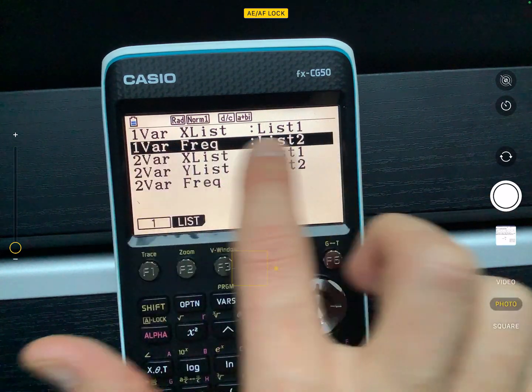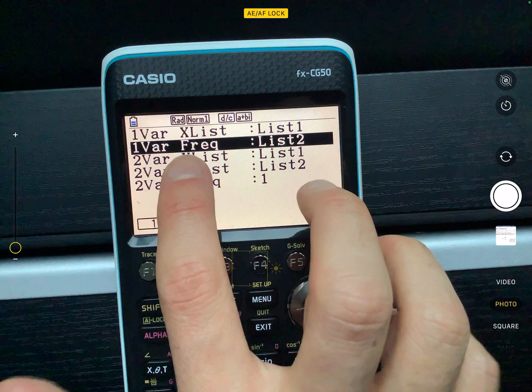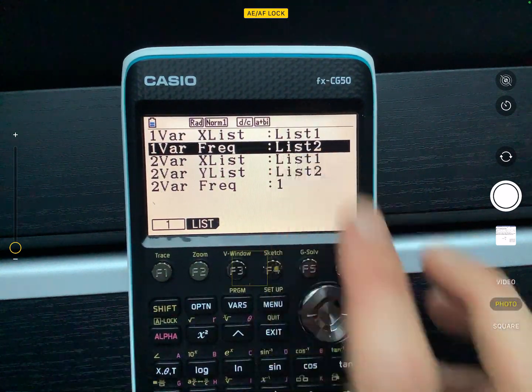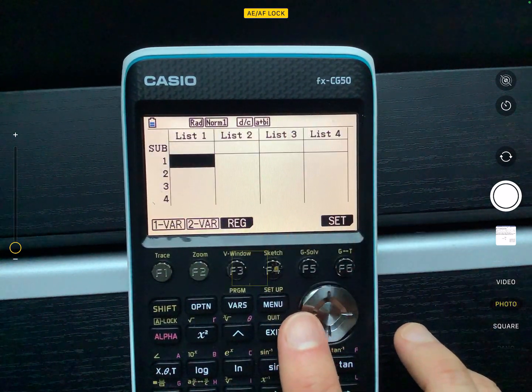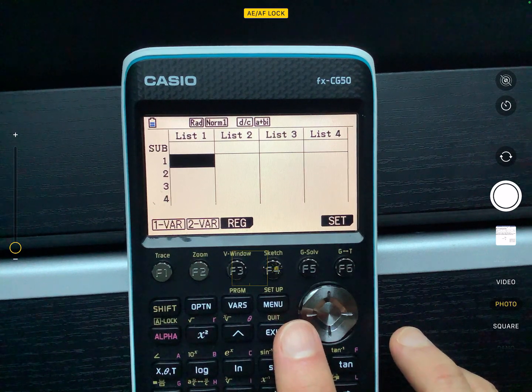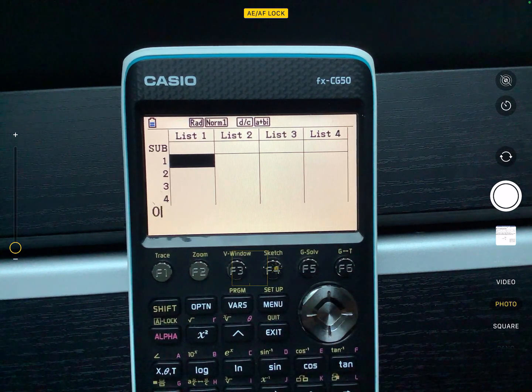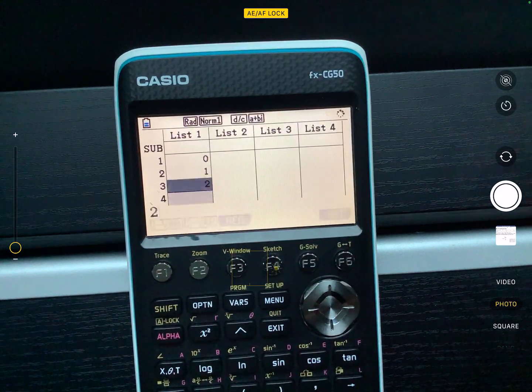So that now the variables are written in list one, and the frequencies are going to be written in list two. So for the data that we have there for the different families, the number of children, there's zero, one, two, or three.